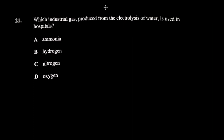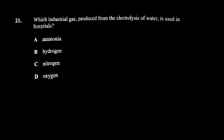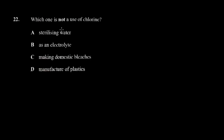Question 21 asks: which industrial gas produced from electrolysis of water is used in hospitals? This one is a no-brainer — it's oxygen. We use oxygen in ventilators, especially now with COVID. Ventilators are crucial electrical equipment used in the ICU to pump oxygen into people's bodies. Oxygen is used for life support.